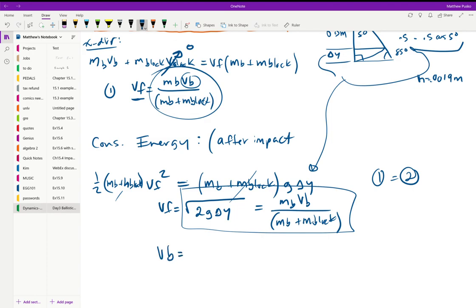So the velocity of the bullet ends up looking like this: square root of 2g delta y times the mass of the bullet plus the mass of the block, all divided by the mass of the bullet. And you should get something around 193 meters per second, I think it's 193.0-ish.